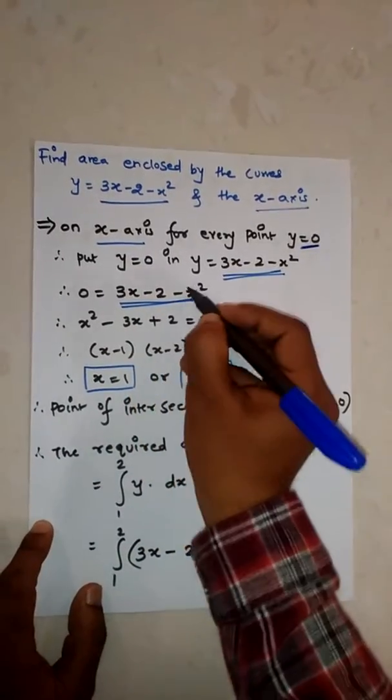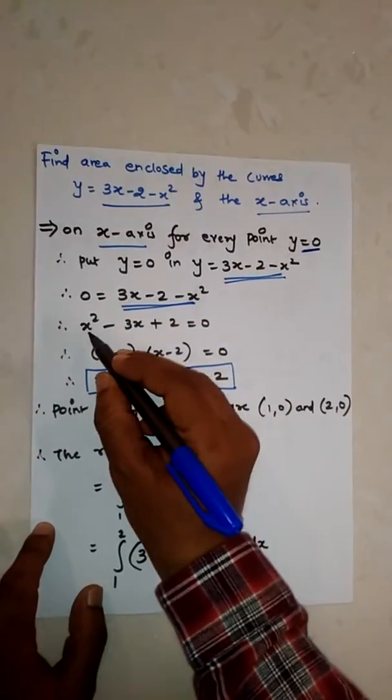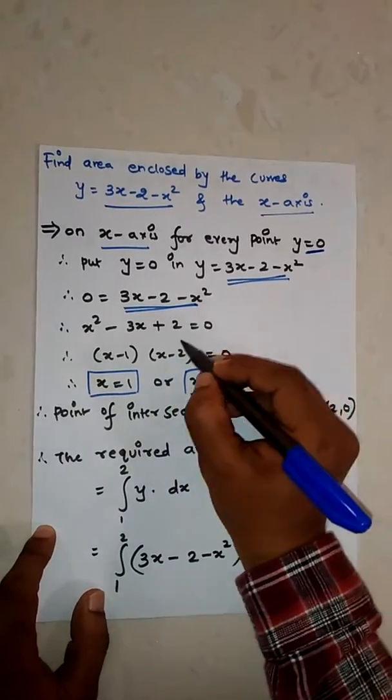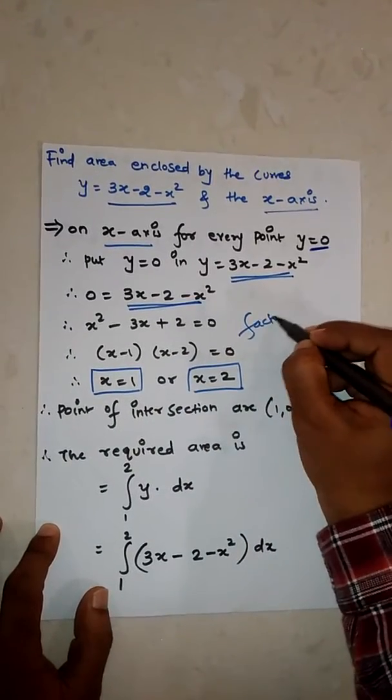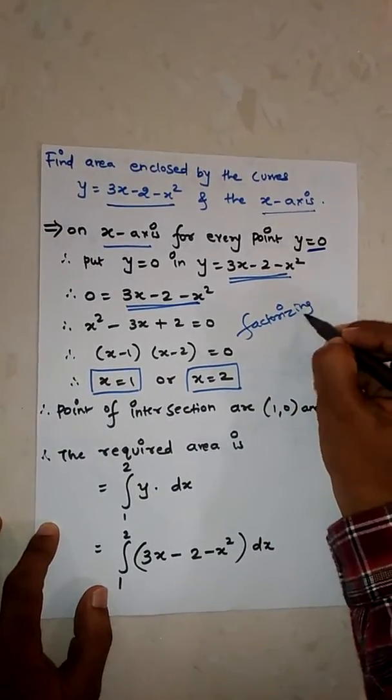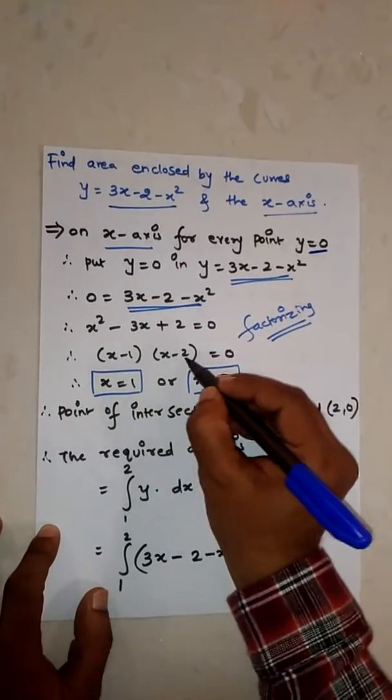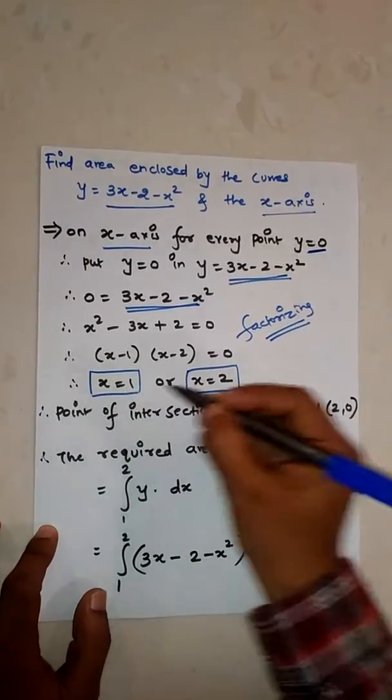Therefore, x square minus 3x plus 2 equals 0. Everything on the other side. Now factorizing: x minus 1 times x minus 2 equals 0. x equals 1, x equals 2.